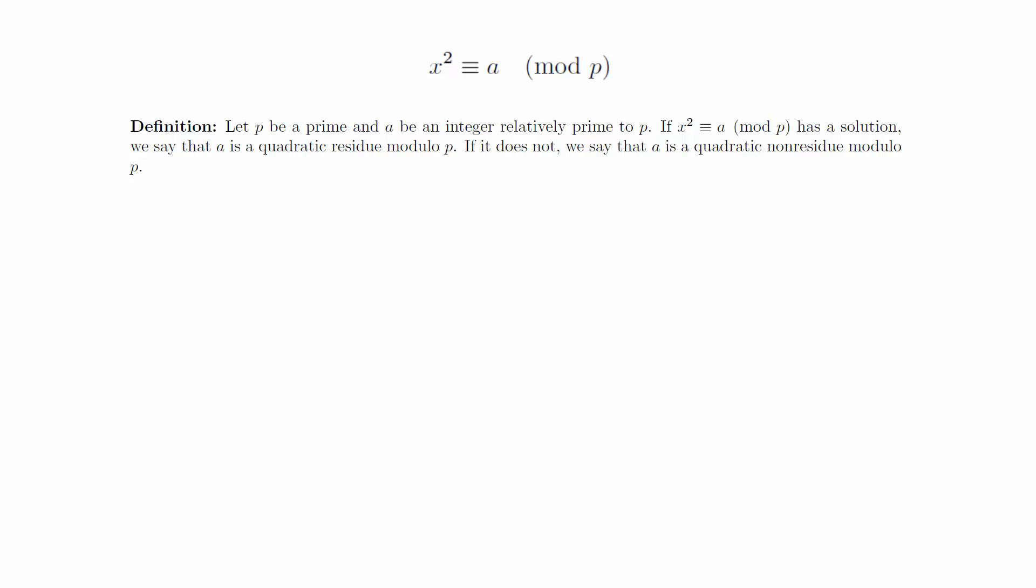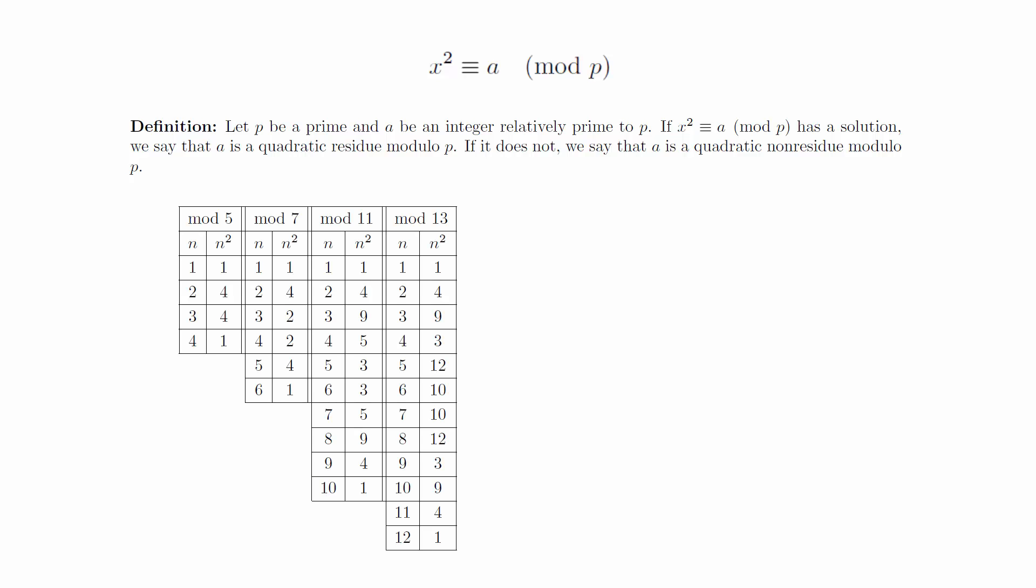Before looking at this from a theoretical point of view, let's look at some explicit examples. Here are some charts that show us all the squares modulo p for different values of p. You can see that we've taken the reduced residue system Z_p star and just squared all the terms and listed the results.